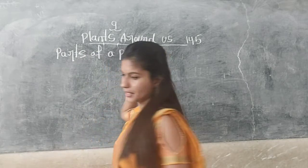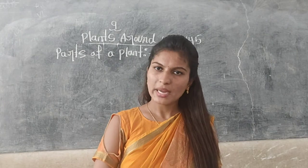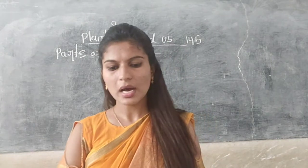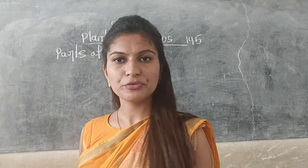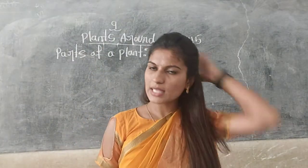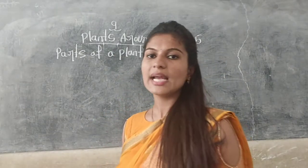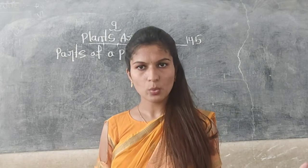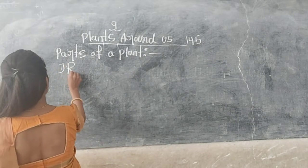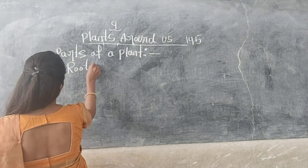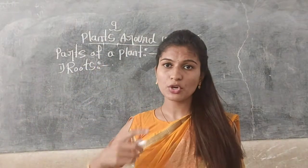A plant has many parts. Some of them are roots, stem, leaves, flowers, and fruits. All these are called the parts of a plant. Now let's study about the first part of a plant — the roots. Let's study what roots are and what the function of roots is.